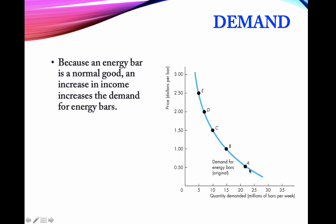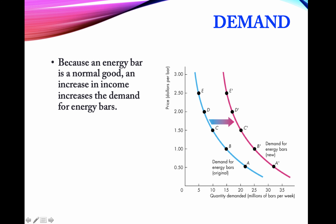As price falls, quantity demanded increases. When there is an increase in income, more people can afford to pay a higher price, so at $2.50, a larger amount of goods will be demanded. The whole demand function shifts to the right — an increase in income leads to a rightward shift in demand.